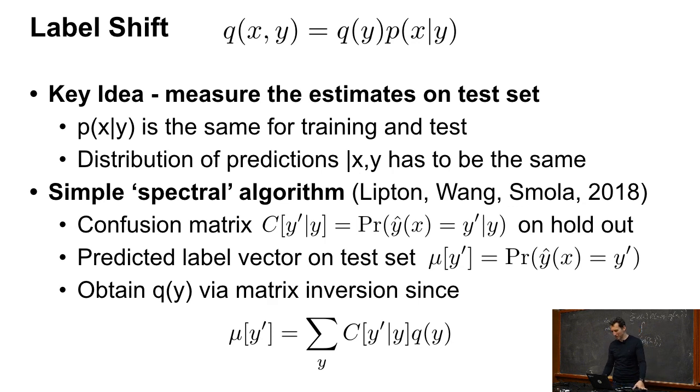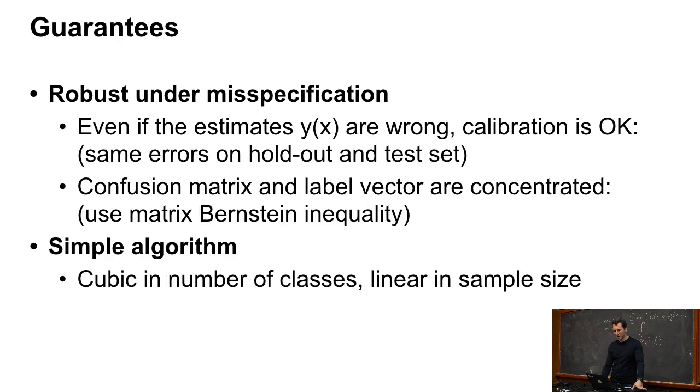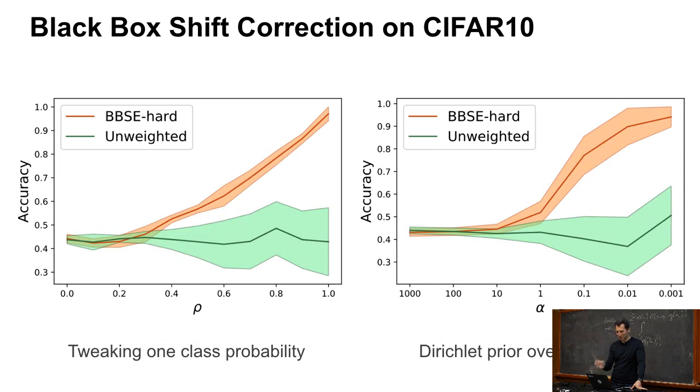So this is really just a quick aside. Don't worry about the details there. But this is just to let you know that besides covariate shift, there are also other related problems that look and feel very similar, but aren't quite the same. Yeah, so just, of course, you test it and it works.